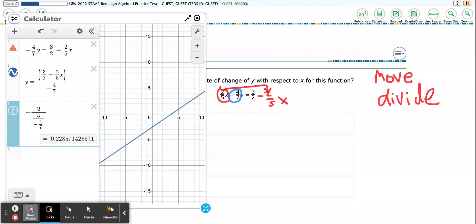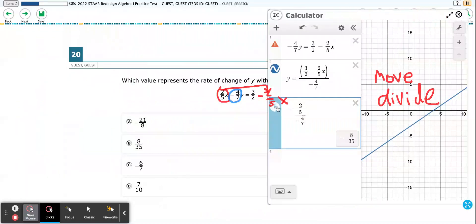And that gives me this complicated fraction, but if I do this, you'll see that it gives me 8 over 35. So when I click there, it takes my decimal to a fraction and I know that the answer choice is B.